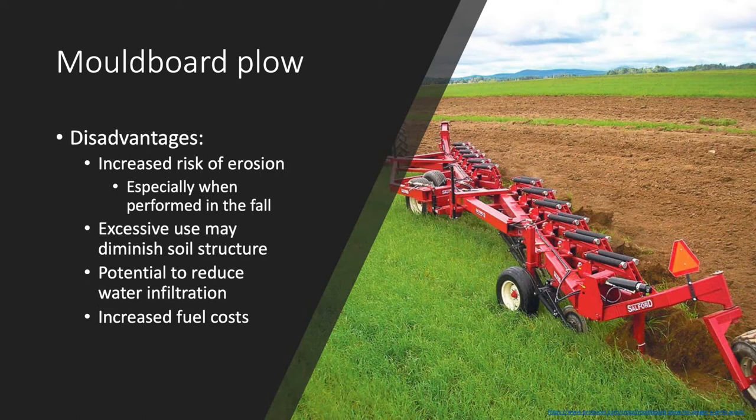However, use of the moldboard plow may elicit certain disadvantages. The inverting action of the moldboard plow causes a significant lack of residue on the soil surface in comparison to other tillage implements. This can increase the risk of erosion, particularly in the spring, if the moldboard plow was used in the fall, as the lack of surface residue leaves the soil more prone to displacement during the time where soils are typically wet in Ontario.